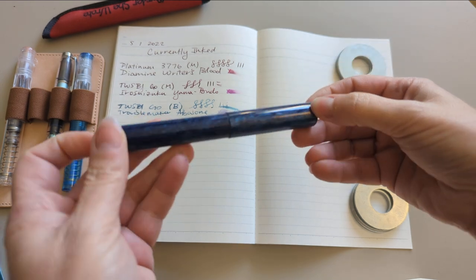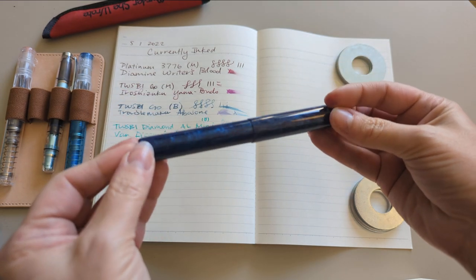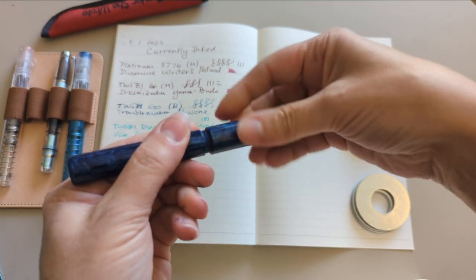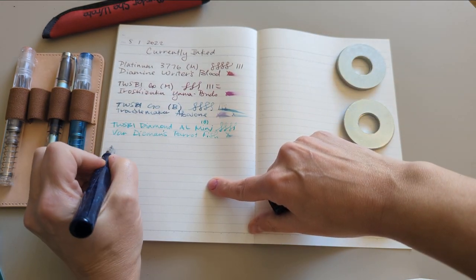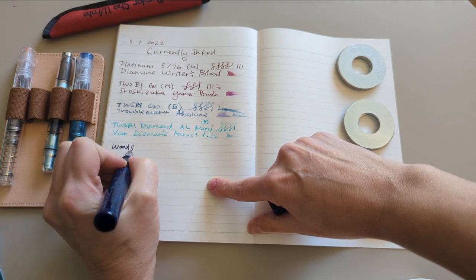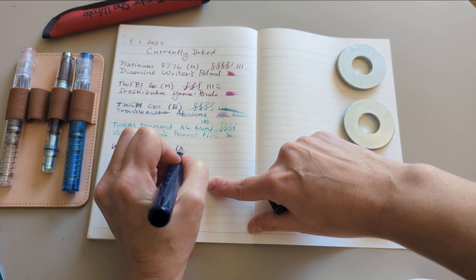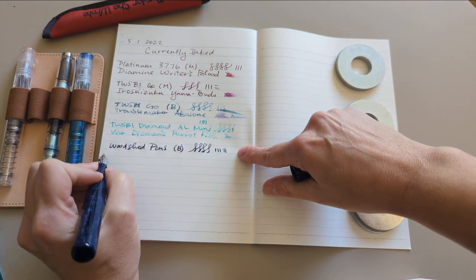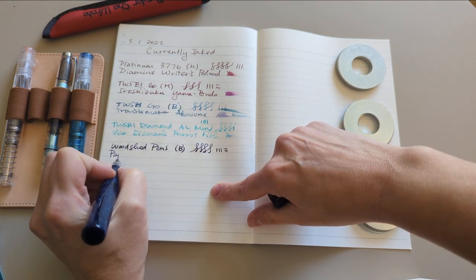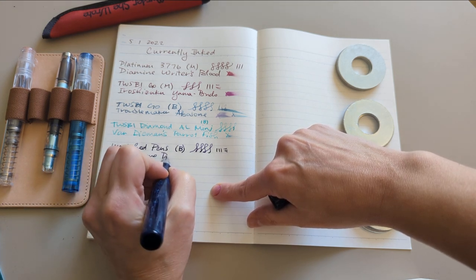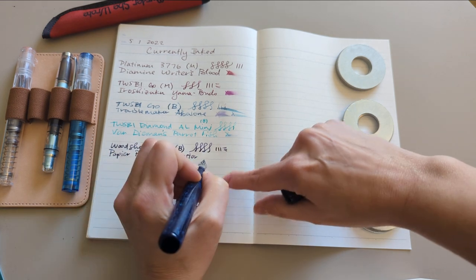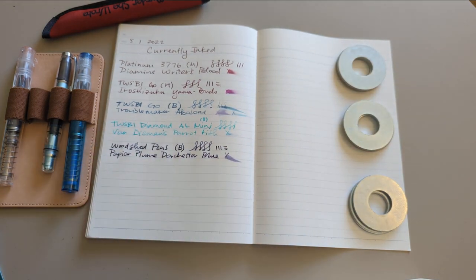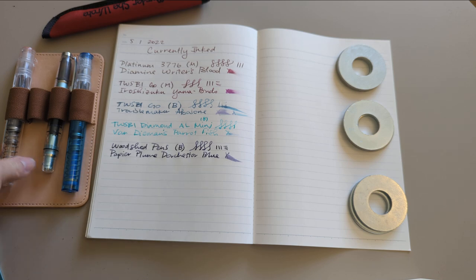This is my other newest pen by Woodshed Pen, Mermaid Tears colorway. Love it, love it. This is Happy Plume Dorchester Blue. I looked up the name of the ink. Not very blue. Such is life.